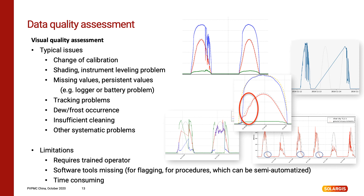Typical problems may be caused by hardware or electrical issues like wrong calibration constants or missing or persistent values due to data logger or battery problems. Other problems may have mechanical origins like instrument leveling or tracking issues. Another big source of measurement disturbance is nature, where snow, dew, frost, dirt, soiling or bird droppings occur frequently. In this case, the biggest issue is that if maintenance is not performed regularly, these defects are detected only after a significant amount of time has passed, thus reducing the quality of usable data.